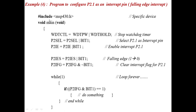First, #include MSP430.h, which is a library file specific to the MSP430. Next, void main indicates the start of the program. Then stop the watchdog timer to avoid resetting the system every 32 milliseconds — by giving the password and a hold value to the control pin, we are stopping the watchdog timer.